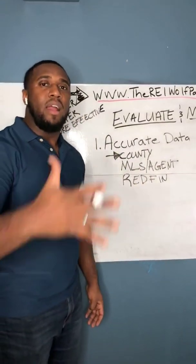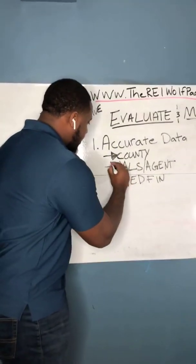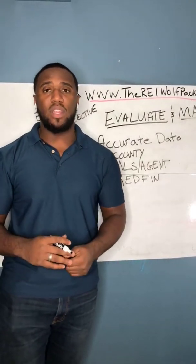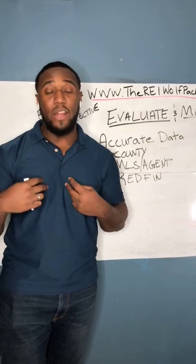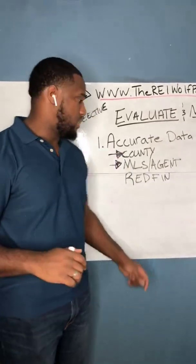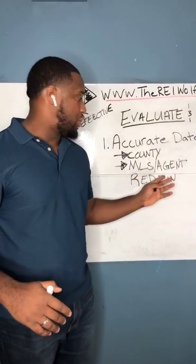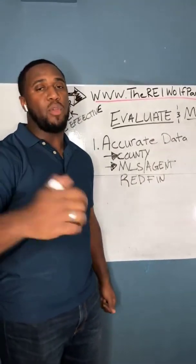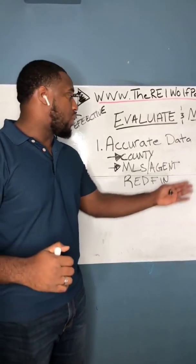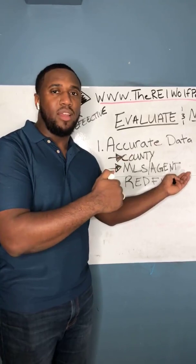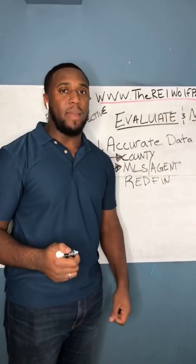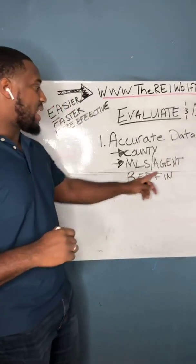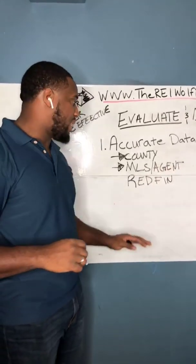The second place that I like to get my accurate data from is the MLS. Now if you're new to real estate investing, you cannot just go and get access to the MLS if you're not an agent. There are only two ways I know how to get access to the MLS legitimately: one is be an agent, two is become friends with an agent who will help you and give you this data every time you have a property. I'll give you a third one — become an assistant to an agent and they can legally give you access to the MLS.